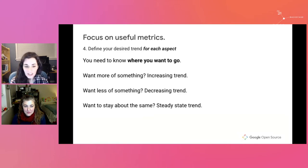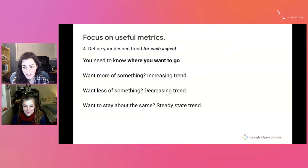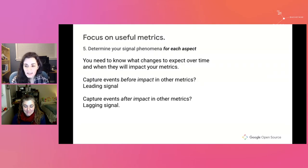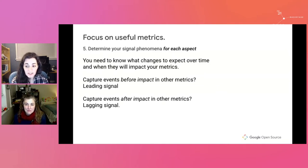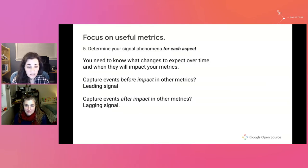Step four is defining your trend — you need to know where you want to go. Do you want more of something? That's increasing. You want something to reduce? That's a decreasing trend. And the often-ignored steady-state trend is when we want things to stay the same. Lastly, we have determining our signal phenomena. Signal phenomena determine when a change in a phenomenon will appear in an observation. You need to know what changes to expect over time and when they will impact you. Does your aspect capture events before the impact shows in other metrics? That's a leading signal. Does it show it after? That's a lagging signal.